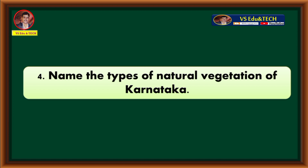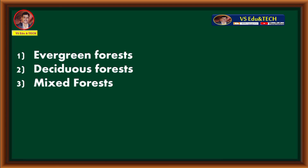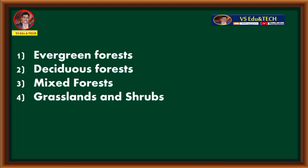Next question: name the types of natural vegetation of Karnataka. The four types of natural vegetation found in Karnataka are: evergreen forests, deciduous forests, mixed forests, and grasslands and shrubs.